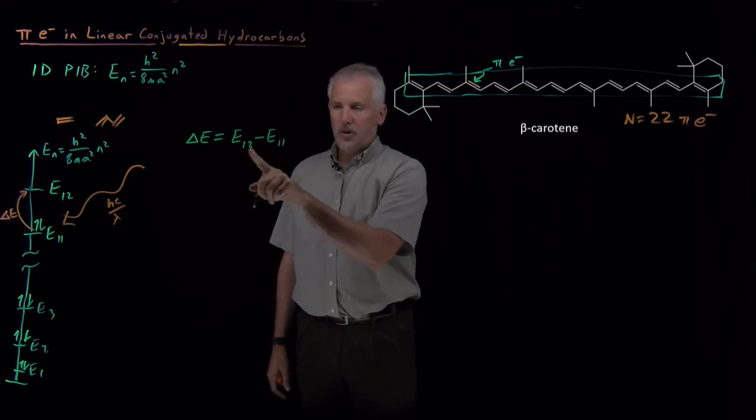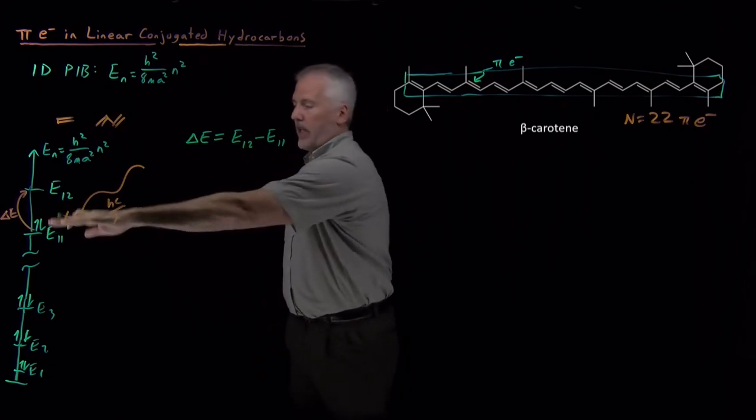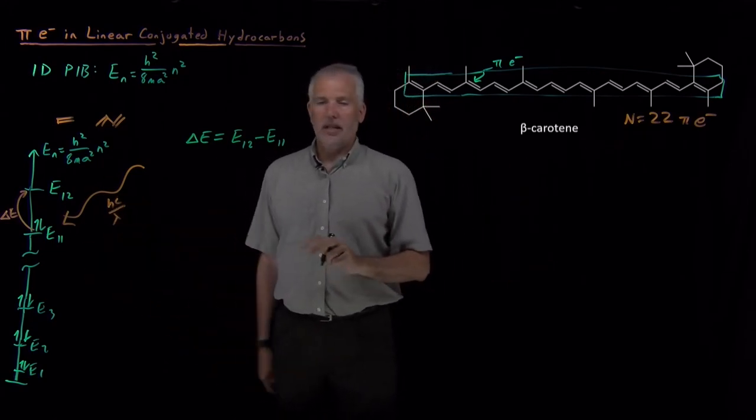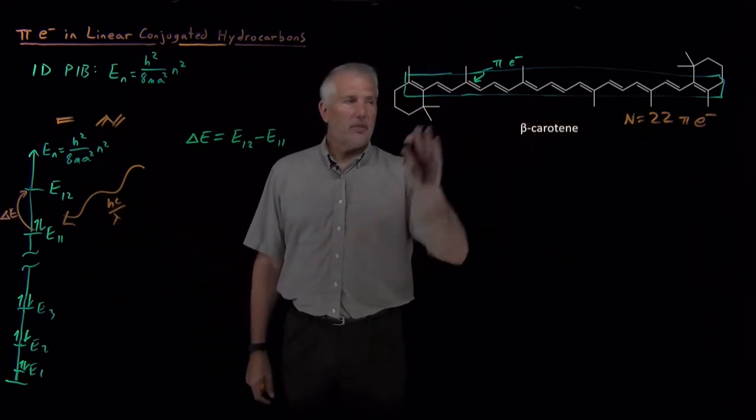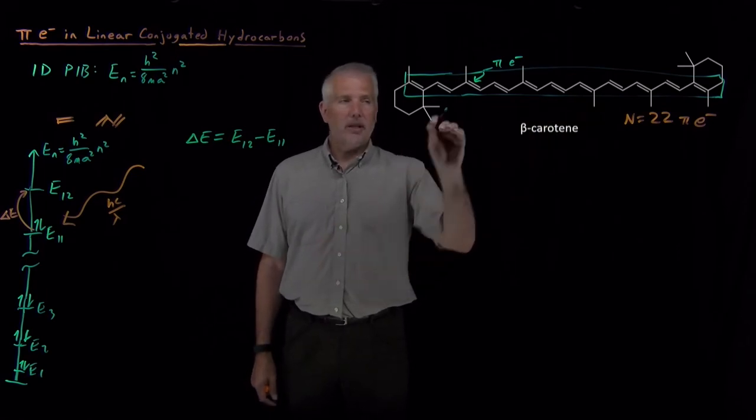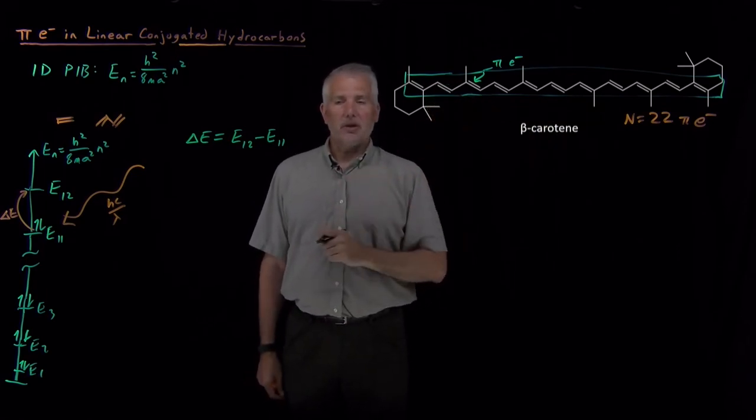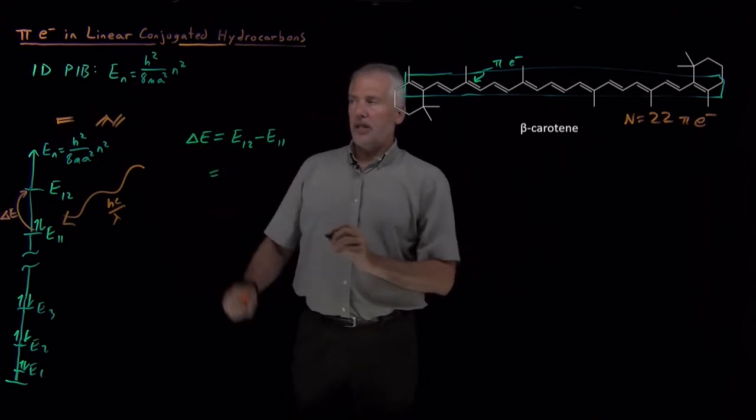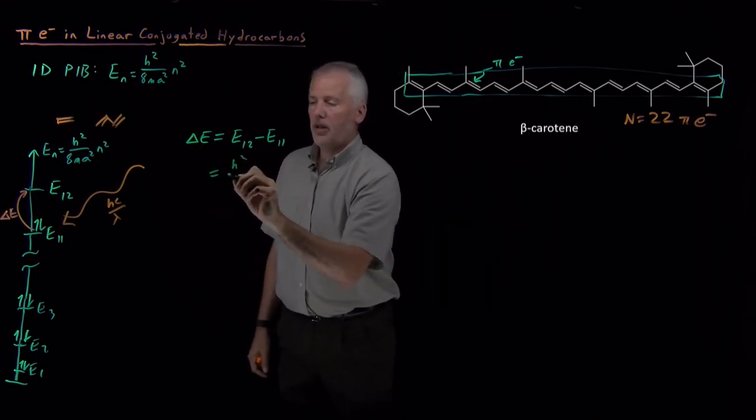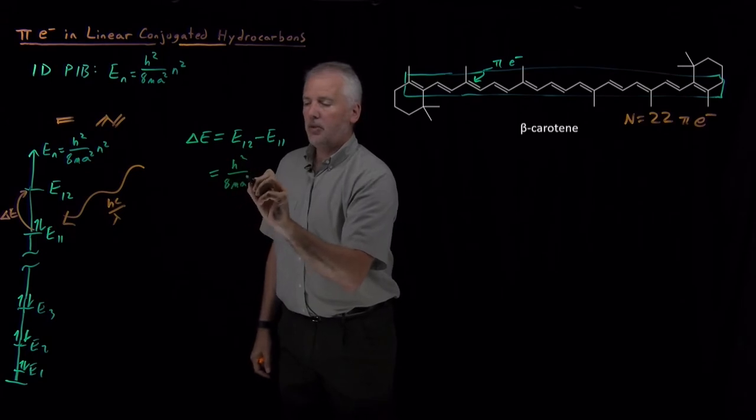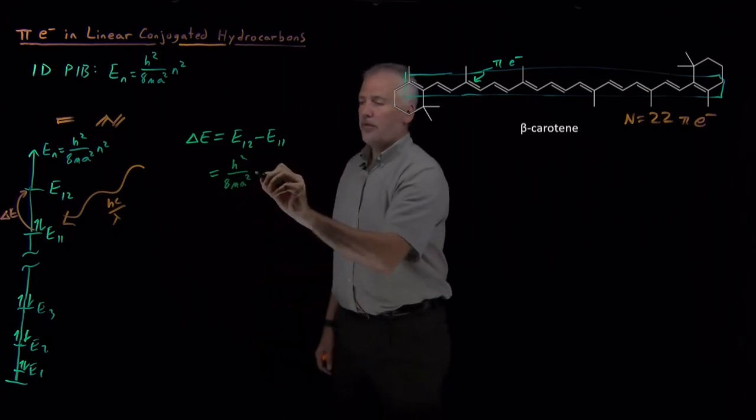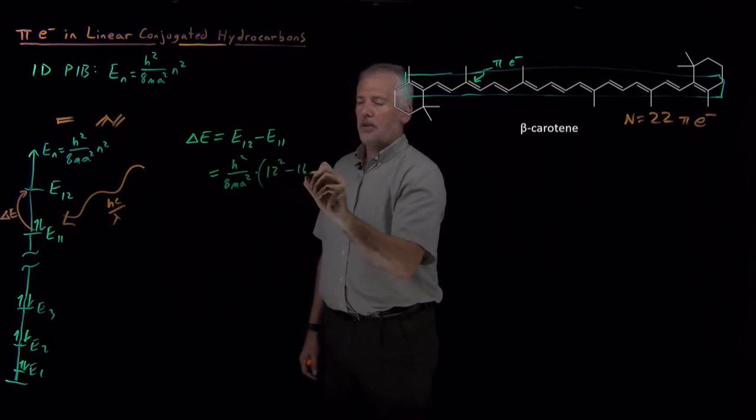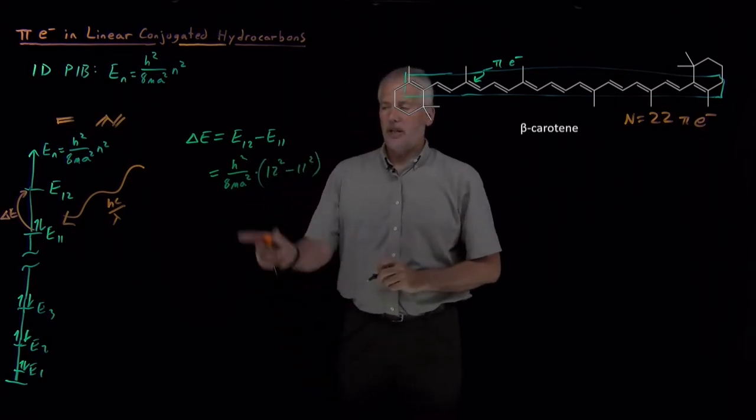So we'll predict that the lowest energy photon is going to correspond to the difference in energy between the 12th and the 11th energy level. And again, the way I got those particular energy levels is by knowing how many electrons were occupying the energy ladder. It's H squared over 8 mA squared times 12 squared, and then H squared over 8 mA squared times 11 squared subtracted from the first one.